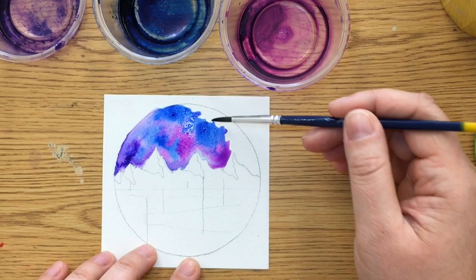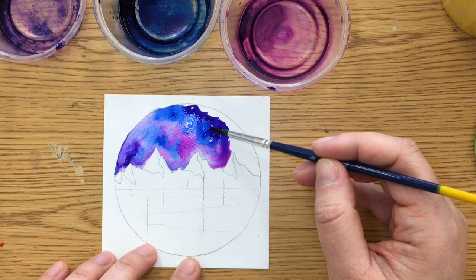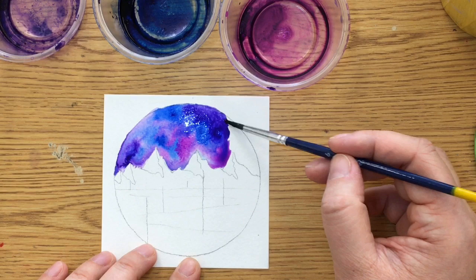Okay I'm going to switch back to this purpley. Mix in the purple. It's pretty dark. So if it ever looks too dark just put a little more water on your brush. And then you can kind of scooch this back in and let it spread a little bit more.